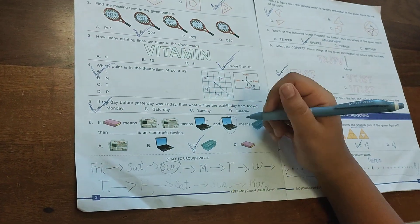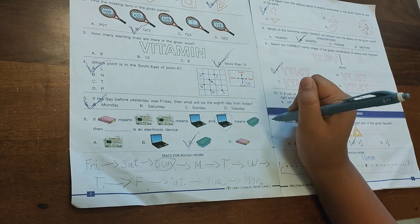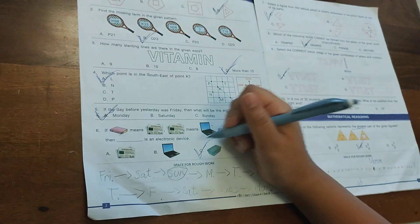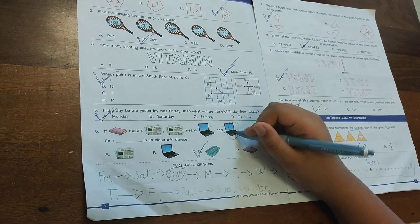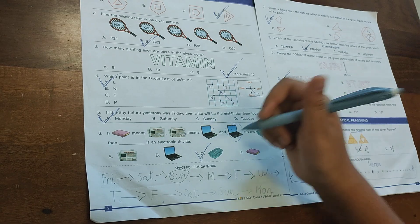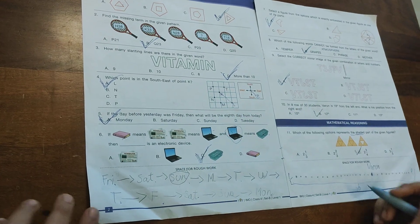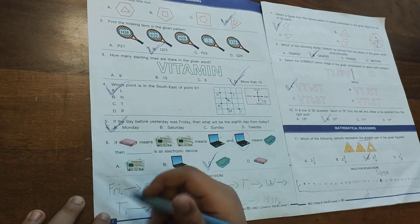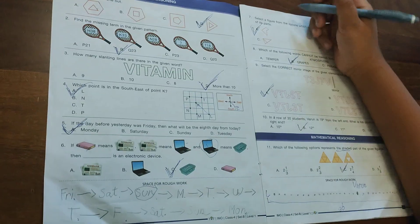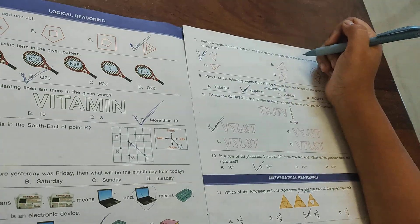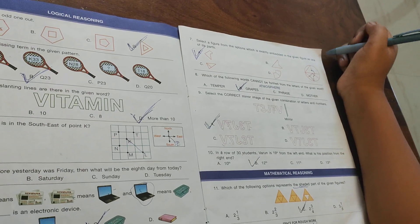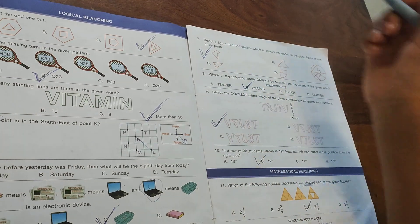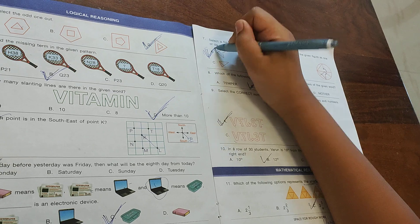If book means newspaper, newspaper means laptop, and laptop means lunchbox, then which is an electronic device? We know laptop means lunchbox, so lunchbox is the answer. Select a figure from the options which is exactly embedded in the given picture as one of its parts - option A is exactly embedded.